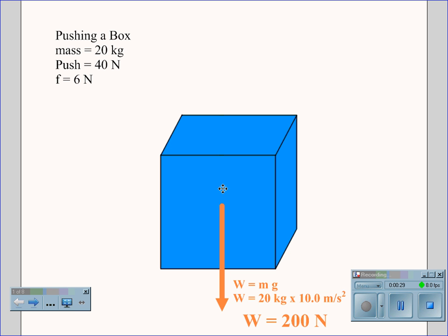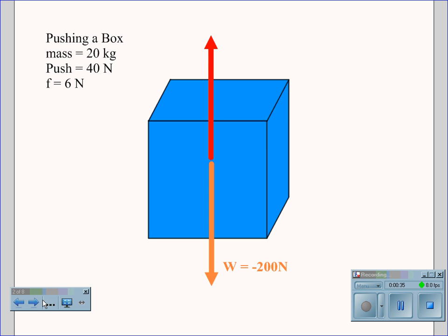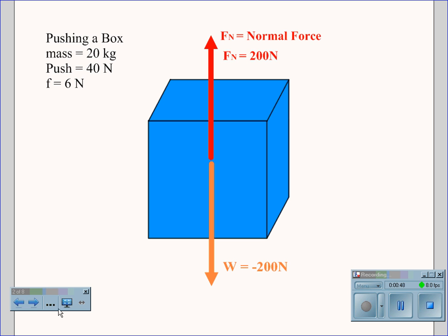200 newtons acts opposite of the normal force, which is the next force we would look for. Our weight is negative 200 newtons because it is acting down. The normal force, which acts exactly opposite of the weight, would then be positive 200 newtons.